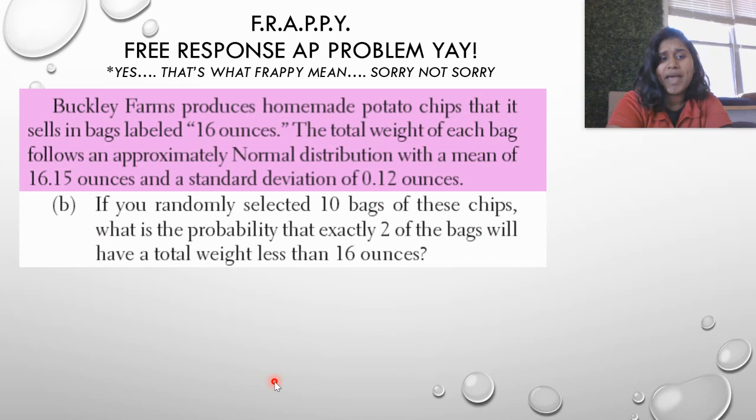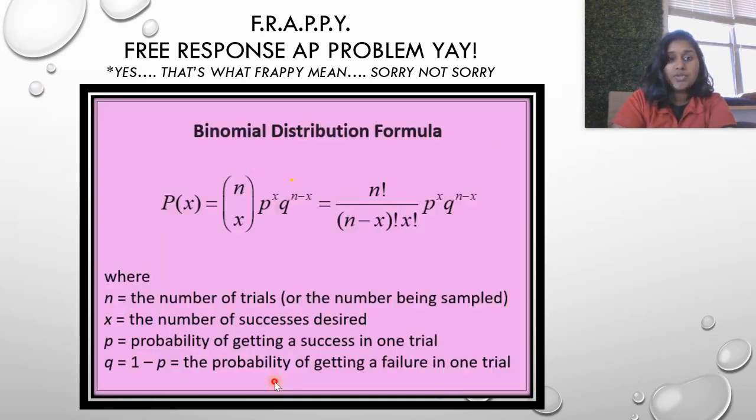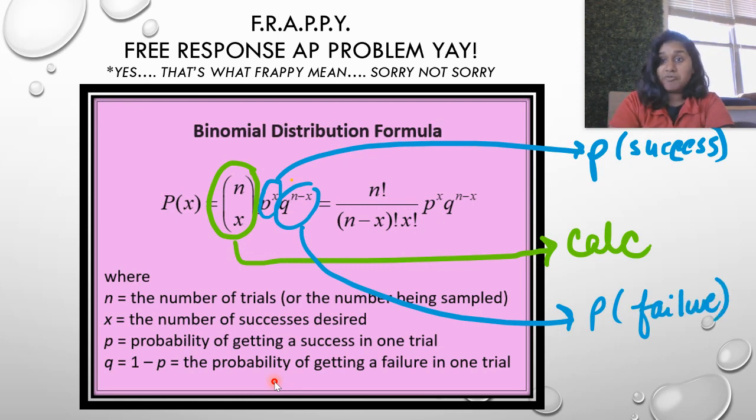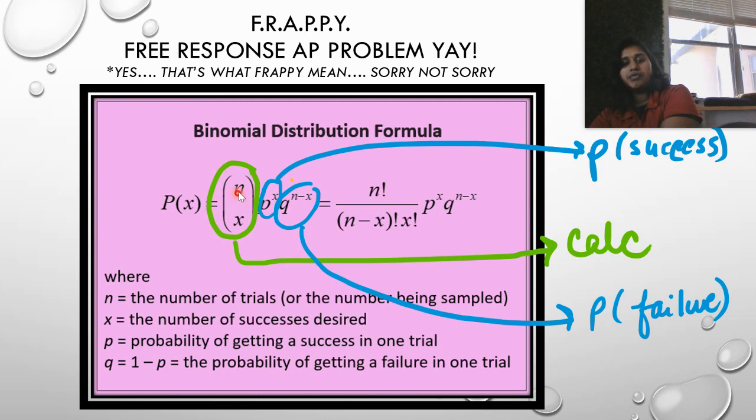If you randomly selected 10 bags of these chips, what's the probability that exactly two of those bags will have a total weight less than 16 ounces? Great, this means I've got a binomial distribution, so I can use this awesome formula. I don't need all of this chaos, so let me break it down for you.